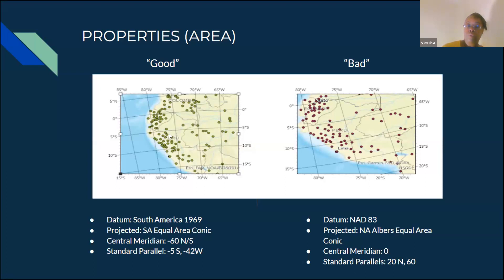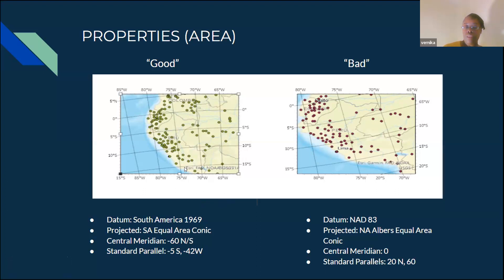Here's an example using Peru. The first map shows the correct shape and distance between points. But in the second map, the area is wider than the original and the points are more spread out, making the population look more sparse than it actually is. To have the correct portrayal of your data, you need to select the correct projection. Peru has its own datum called South America 1969, and because it's between two standard parallels, you would use a conic projection, which makes it less distorted.